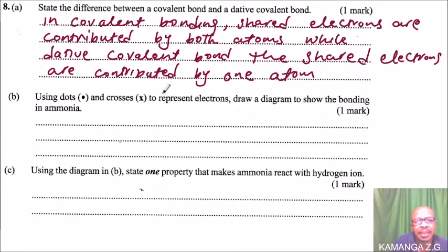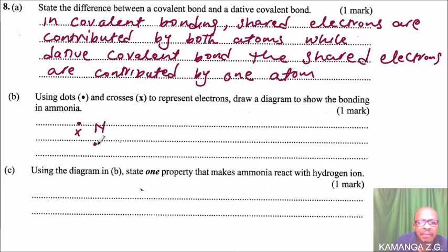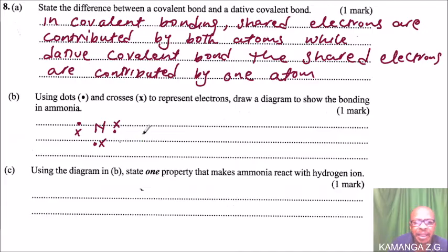Let's go back and see the next question. Using dots and crosses to represent electrons, draw a diagram to show the bonding of ammonia. We are told to use dots. Here we have nitrogen — nitrogen normally has five electrons in its outermost orbital shell, and therefore it requires three hydrogen atoms to combine to make ammonia.